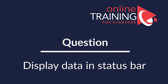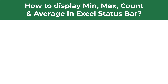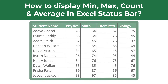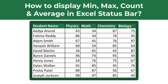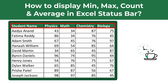Very frequently on the test you get a question about usage of formulas in Excel, and sometimes questions on how to display data in the status bar. For example: how do you display minimum, maximum, count, and average in the Excel status bar? You're presented with a data set of student grades showing student names and their grades in physics, math, chemistry, and biology. Give yourself a little time to see if you can come up with the solution.